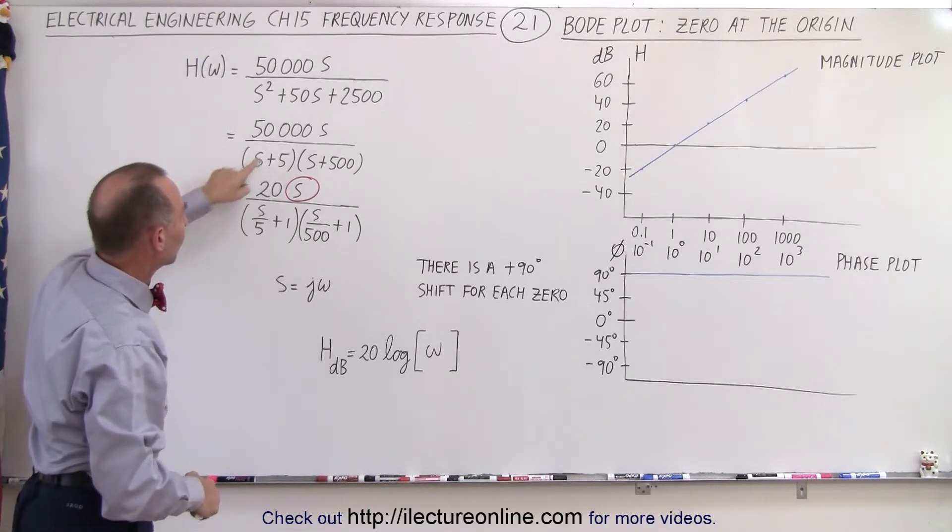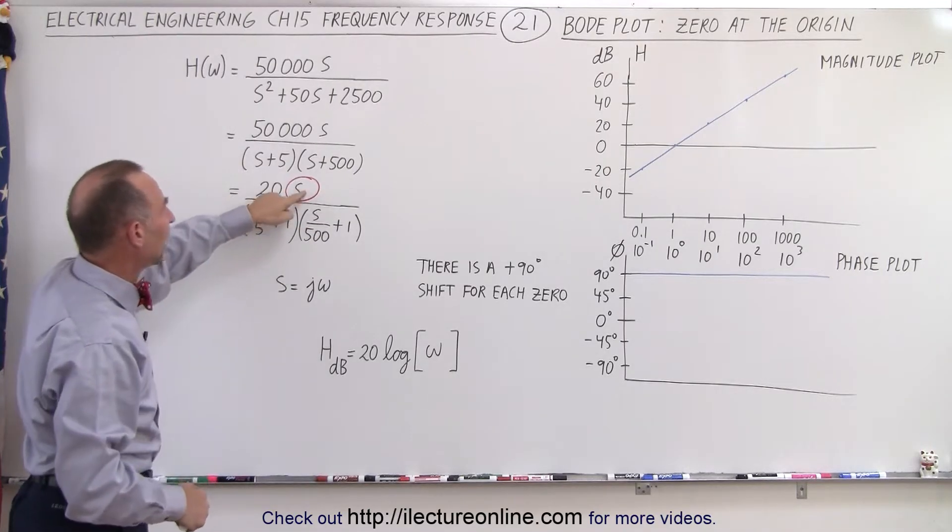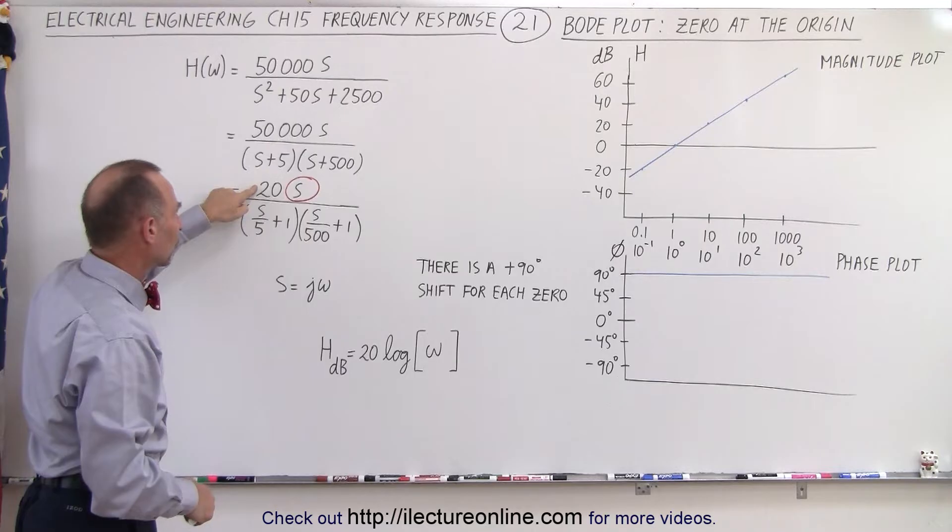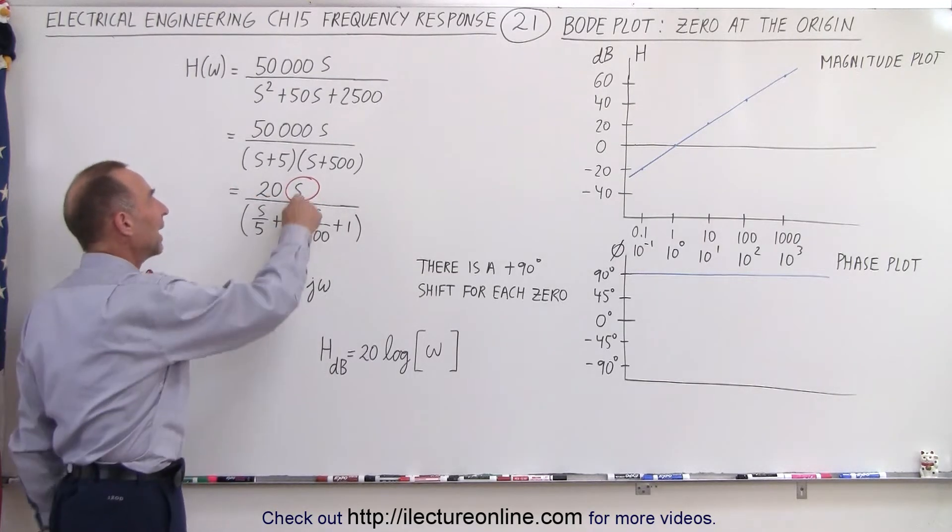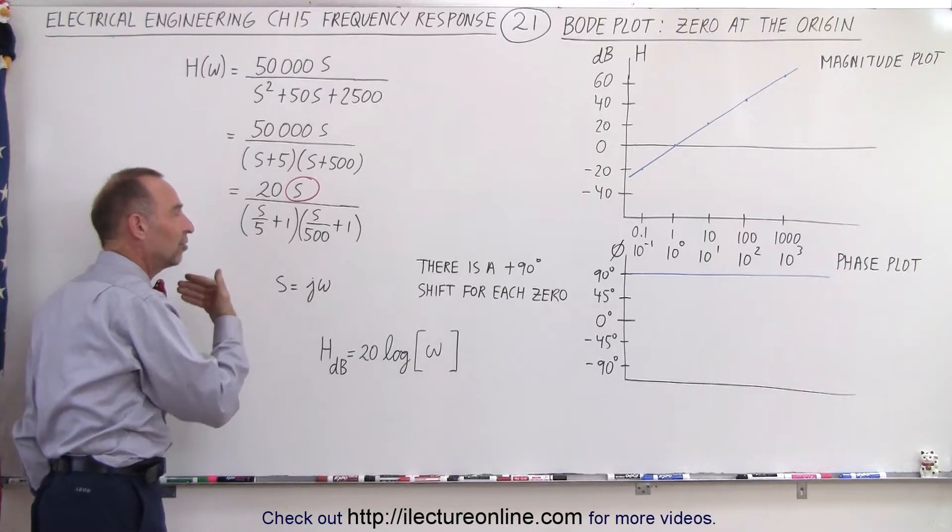Notice when we reduce it into the standard form we end up with an s in the numerator and of course the constant. We looked at the constant in the previous video but now let's look at an s which represents a zero.